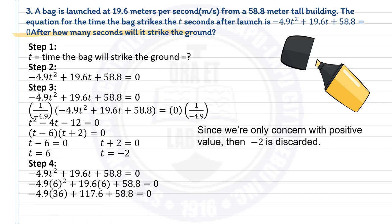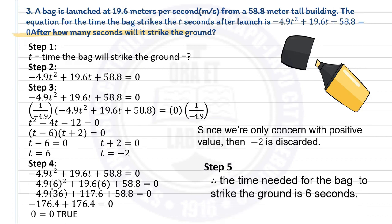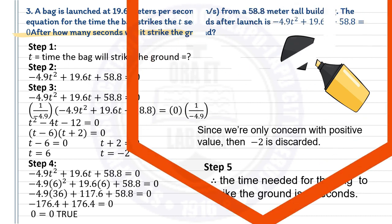Simplifying by substituting t equals 6: negative 4.9 times 36 (since 6 squared is 36) plus 19.6 times 6 equals 117.6, plus 58.8. Negative 4.9 times 36 gives negative 176.4, and simplifying, you arrive at 0 equals 0 — that is true. Conclusion: Therefore, the time needed for the bag to strike the ground is 6 seconds.